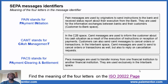PAIN messages are used by originators to send instructions to their bank and receive status reports about their execution from their bank. They are used for the information exchange between banks and their customers. In the customer-to-bank space, CAMT messages are used to inform the customer about the cash situation as a result of the execution of instructions or the reception of payments.